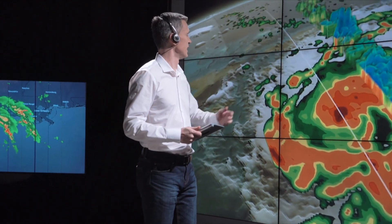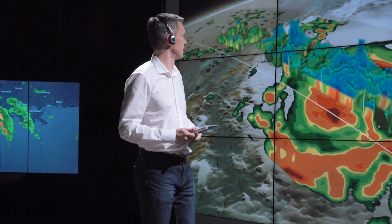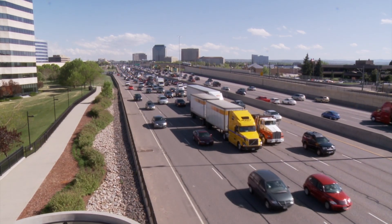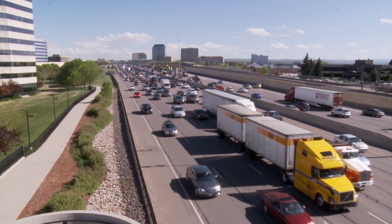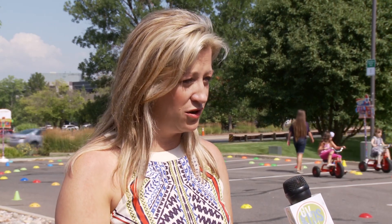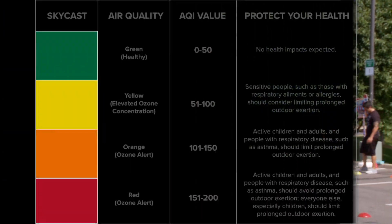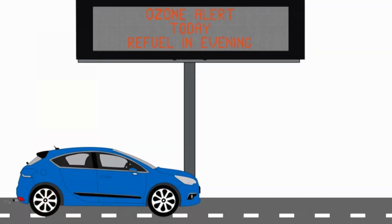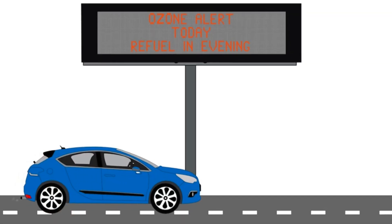Ground level ozone is measured and forecasted by air quality meteorologists. They do this by looking at weather conditions and all the emission sources from cars, trucks, factories, and plants. On high ozone days, the Colorado Department of Public Health and Environment and the Regional Air Quality Council issue ozone alerts. You might see ozone alerts on the highway message boards as you're driving.